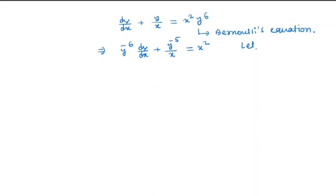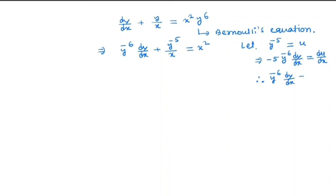Let y to the power minus 5 equal u, so that implies minus 5 times y to the power minus 6 times dy/dx is equal to du/dx. Therefore, y to the power minus 6 dy/dx is equal to minus 1/5 du/dx.